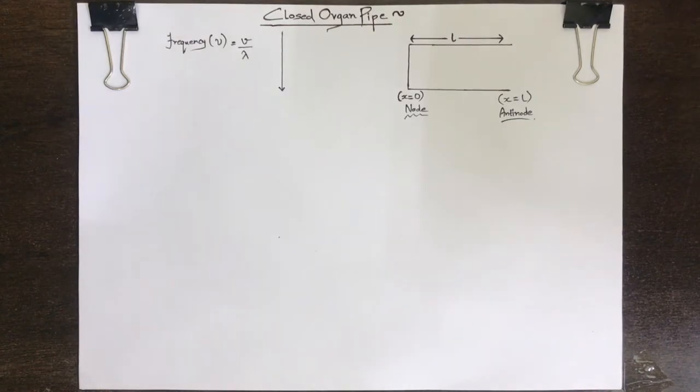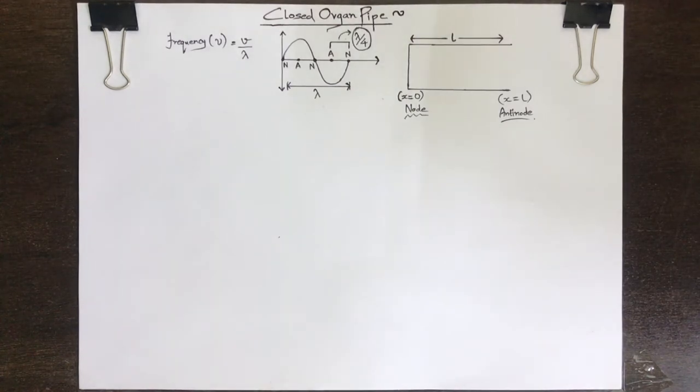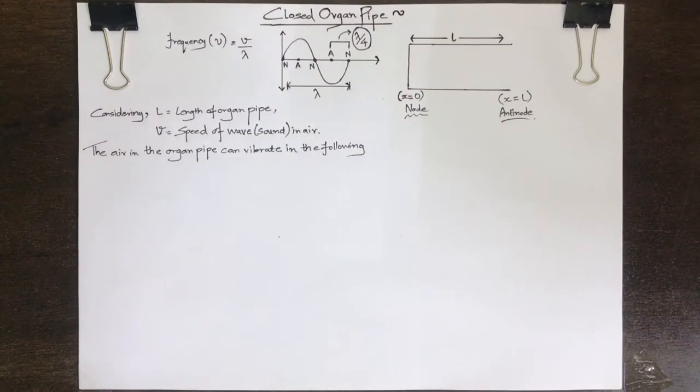The alongside figure represents the alternate formation of nodes and antinodes and also gives us an idea about the separation between an adjacent antinode and node, which is equal to lambda by 4. Considering L as the length of the organ pipe and V the speed of sound wave in air, the air in the organ pipe can vibrate in the following types of modes.